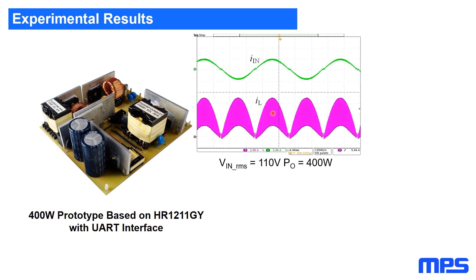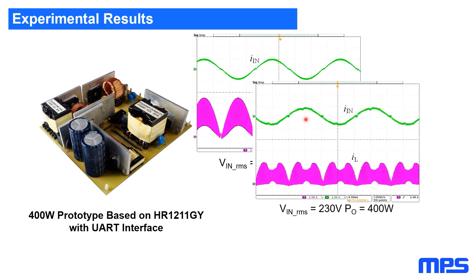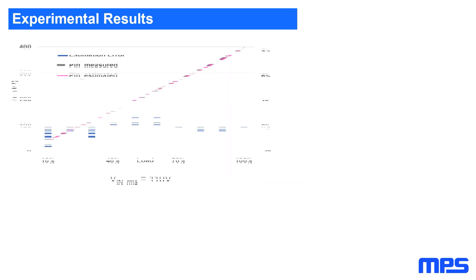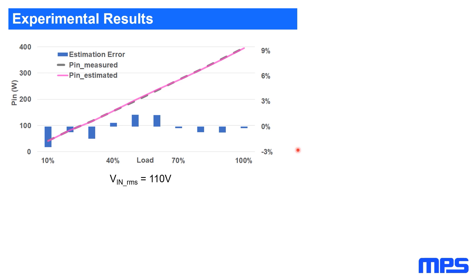These are the waveforms in low line full load conditions running in complete CCM with the input current in green and the inductor current in pink. These are high line full load running in mixed DCM and CCM condition. These are low line light load running in complete DCM. The estimation results are being compared to actually measured results by a power meter with pink line representing the proposed estimation results and the gray dashed line representing the actually measured results.